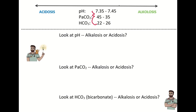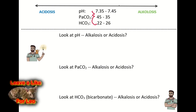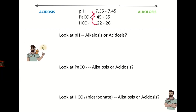Whenever you're interpreting arterial blood gases, you always want to consider what the patient's situation is and what underlying conditions they have. Arterial blood gases are an objective finding of a person's situation. For example, if a patient has COPD, they're most likely going to be in respiratory acidosis. You always want to use these objective findings — the arterial blood gases — to confirm that, rather than automatically interpreting the ABGs in isolation.